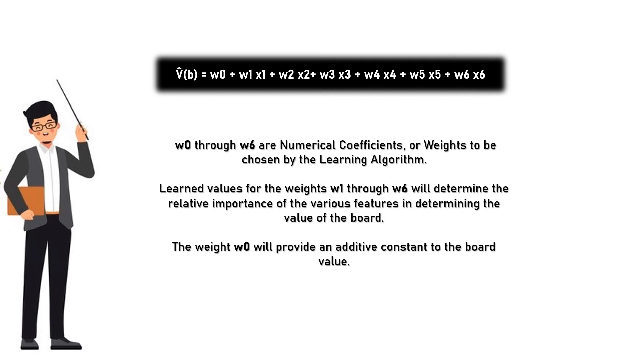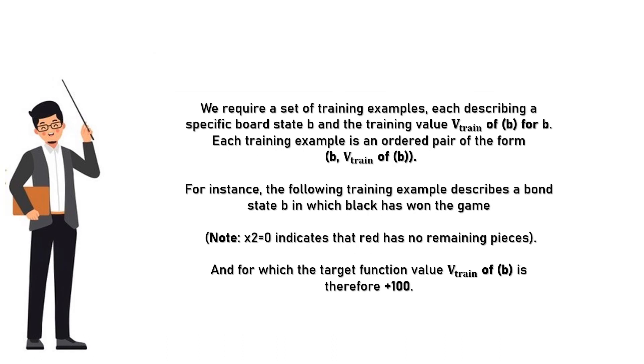Coming to the next keynote, that is four: choosing a function approximation algorithm. In order to learn the target function f, we require a set of training examples, each describing a specific board state b and the training value Vtrain(b) for b. Each training example is an ordered pair of the form (b, Vtrain(b)). For instance, the following training example describes a board state b in which black has won the game. Note x2 equals 0 indicates that red has no remaining pieces, and for which the target function value Vtrain(b) is therefore plus 100.